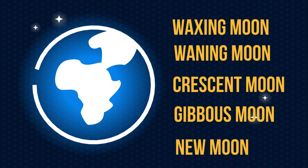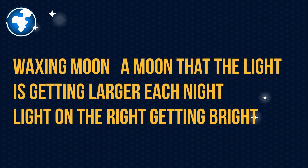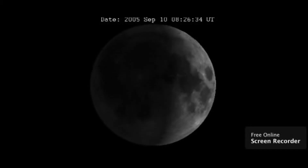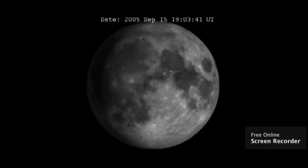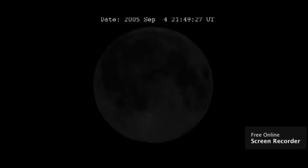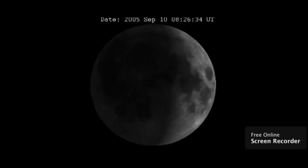Up first, waxing moon — a moon where the light is getting larger each night. You can remember it by the saying: light on the right getting bright. And here's what a waxing moon looks like.